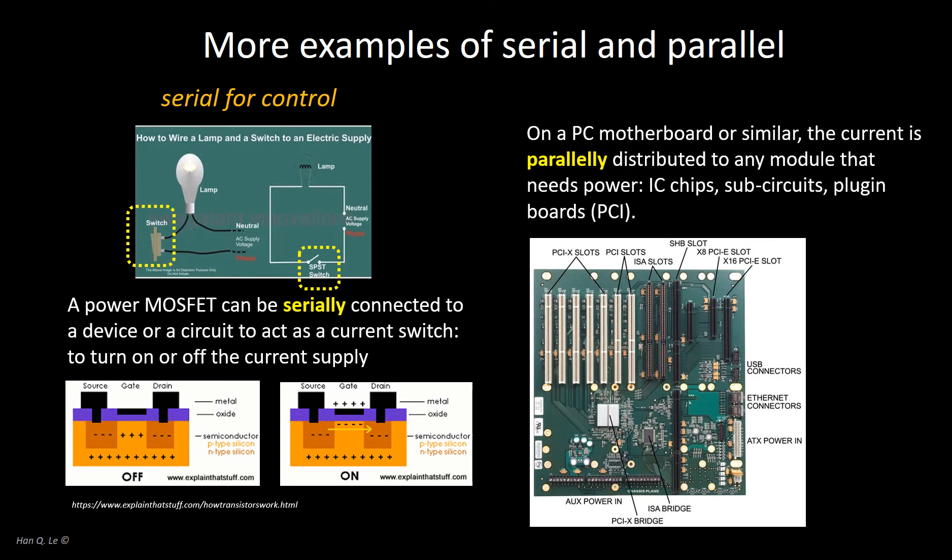On the other hand, if a system has several devices or sub-circuits that operate independently from each other, then they should be in parallel, such as the PCI slots on a PC motherboard. Hence, a function of the parallel configuration is for independent distribution.